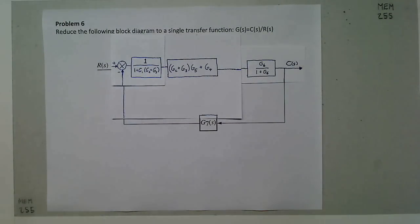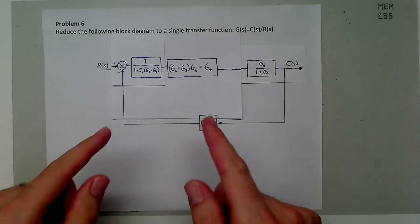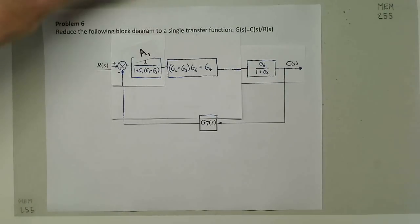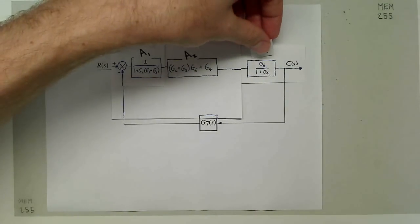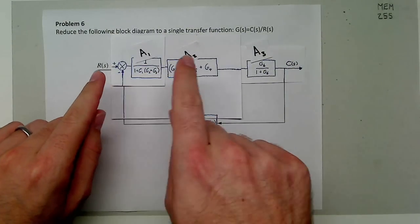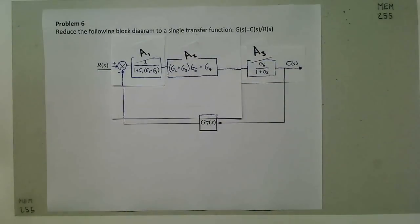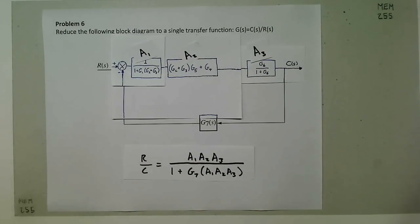Now you can see we have a really simple system with one solid forward gain. The forward gain is complicated, but it's the product of these three things. If we relabel these a1, a2, and a3, then we have a very simple forward gain of a1 times a2 times a3 and a feedback gain of g7. We can use the feedback equation g over one plus gh to give us the final transfer function: c over r equals a1 a2 a3 over one plus g7 times a1 a2 a3.